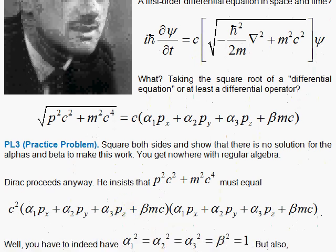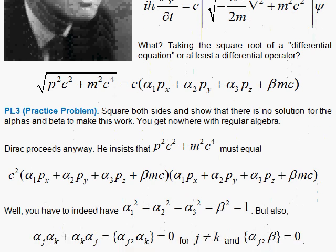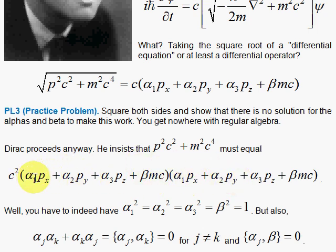Dirac says, wait a minute here. When you multiply this out, when you look at that px py term, you have a px py coming from your alpha 1 with your alpha 2. But you also have here a py and a px term coming from the alpha 2 hitting the alpha 1. And here you have alpha 1 alpha 2 plus alpha 2 alpha 1, and you assumed they were equal.